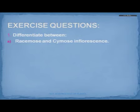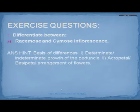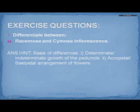If you have completed the exercise, I am now going to give you an outline of ideal answers. If you have not yet completed your exercise, these outlines will help you frame the ideal answers. The first question was: differentiate between racemose and cymose inflorescence. You can base your answer around the determinate and indeterminate growth of the peduncle, and also the acropetal and basipetal arrangement of flowers.